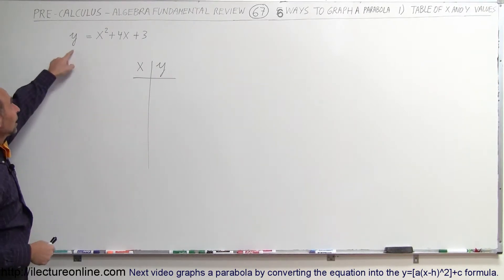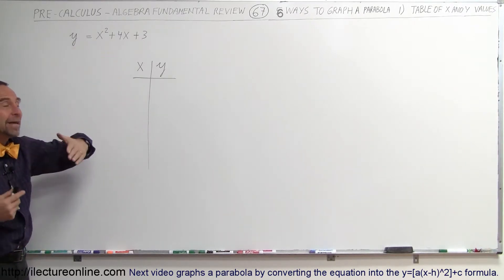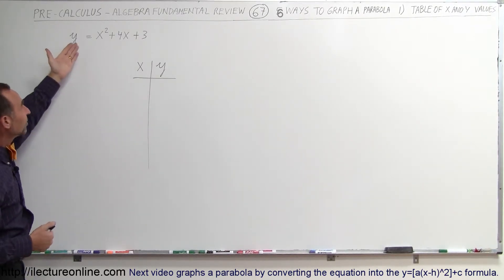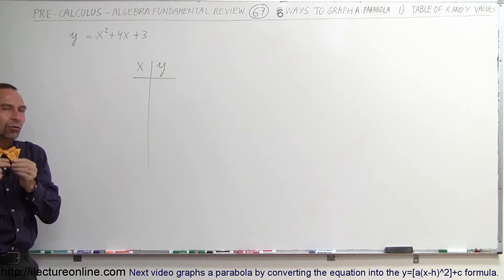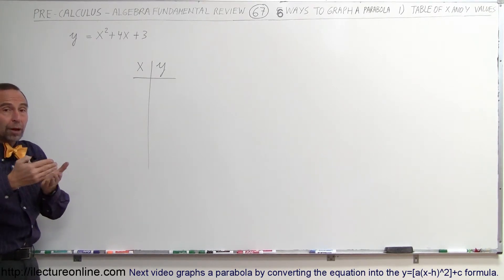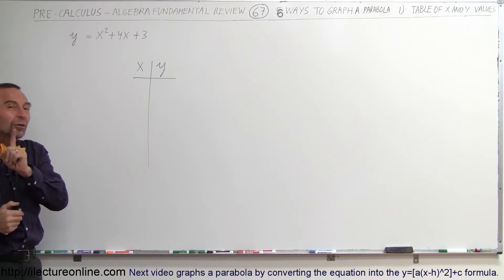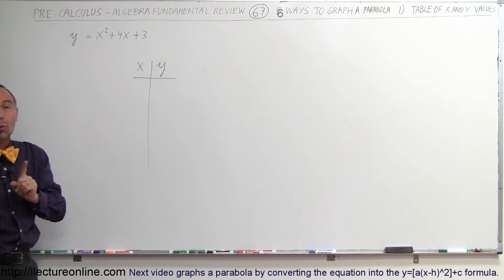You simply want to come up with a table of x and y values. Remember, a function like this, y equals x squared plus 4x plus 3, means that the value for y depends on the value for x. So when you plug in a certain value for x, you get a corresponding value for y.